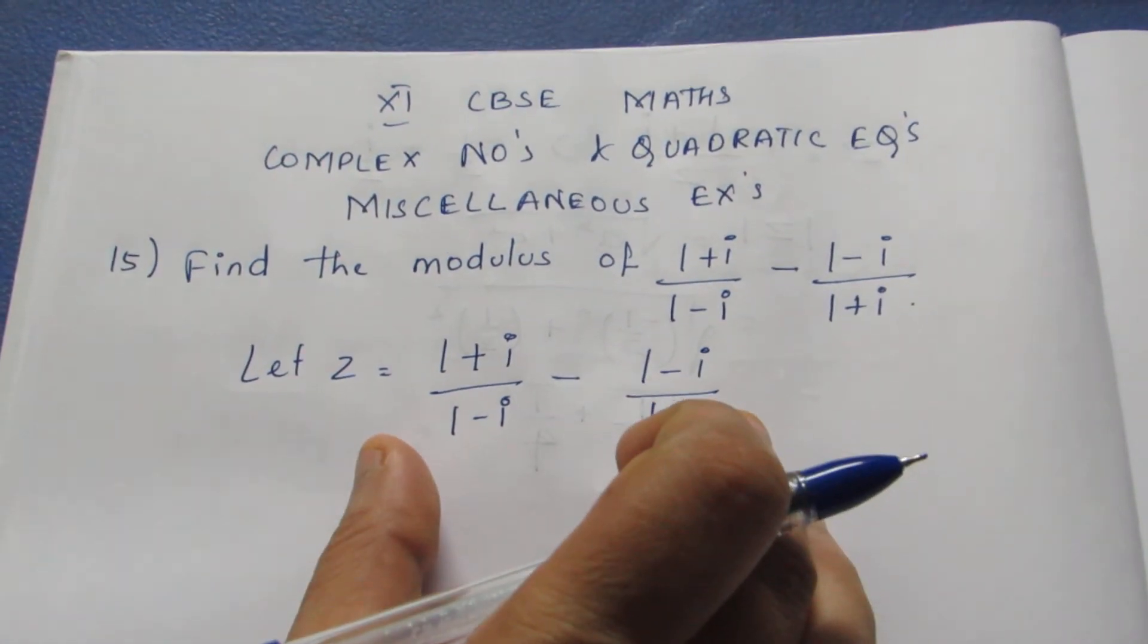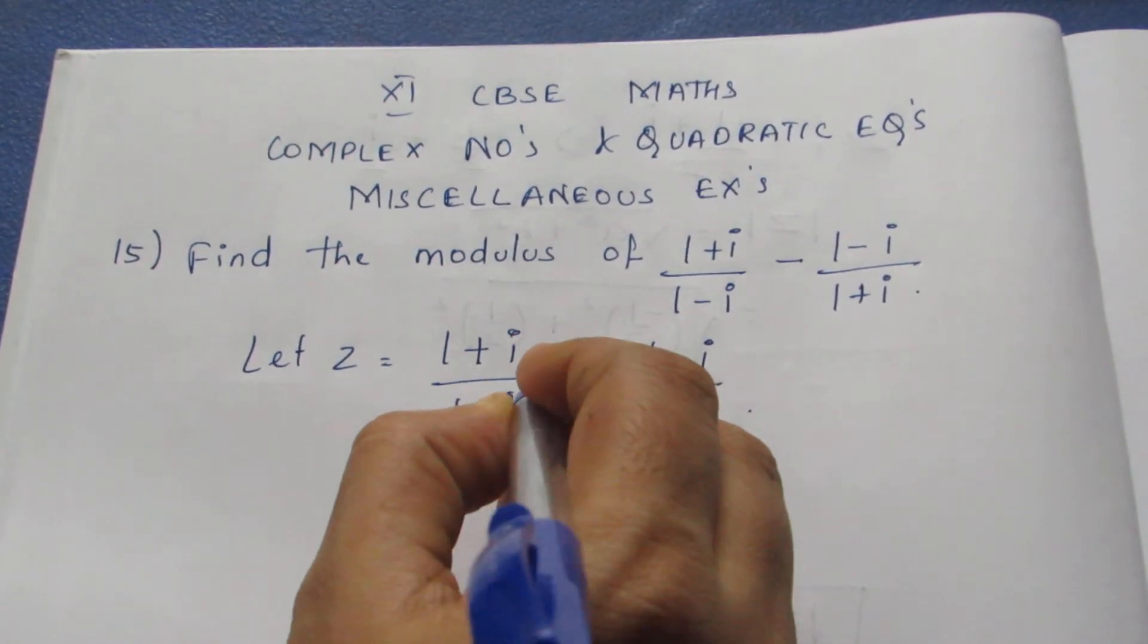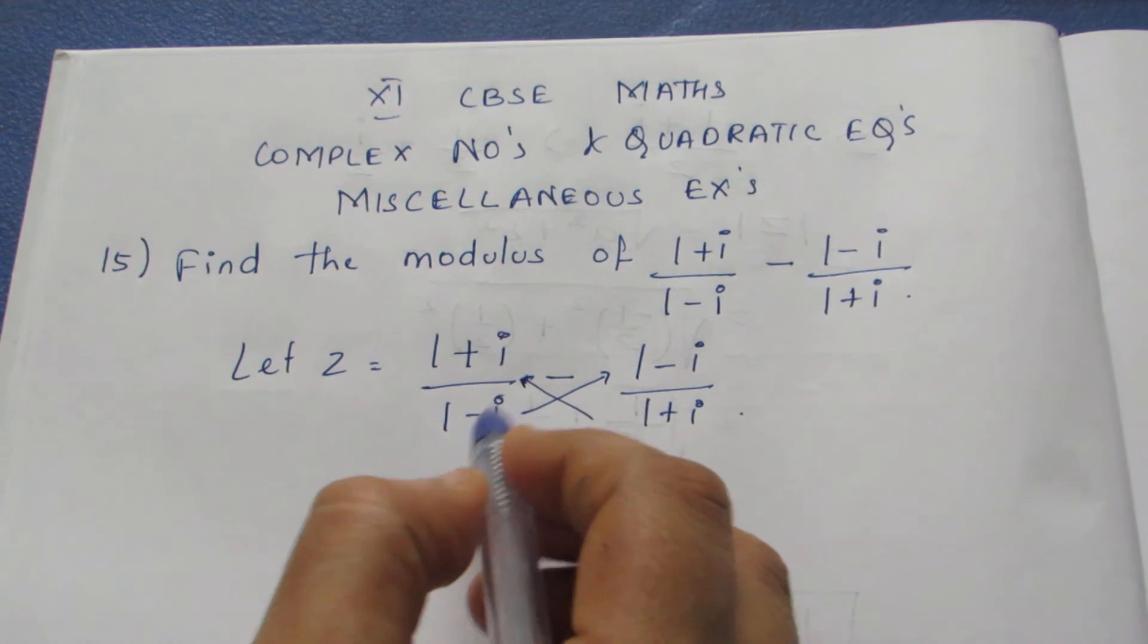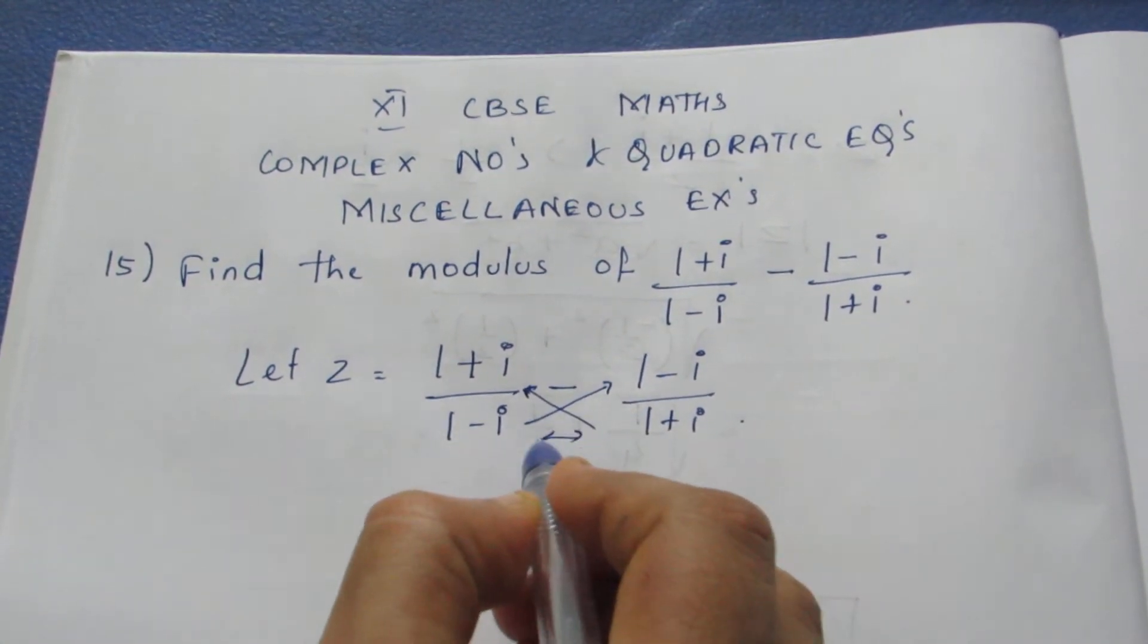First we need to solve this. This is not in a standard form, we need to solve it. For that we need to take LCM. For taking LCM, just cross multiply the numerators and multiply both denominators.